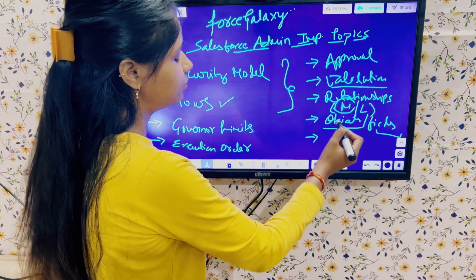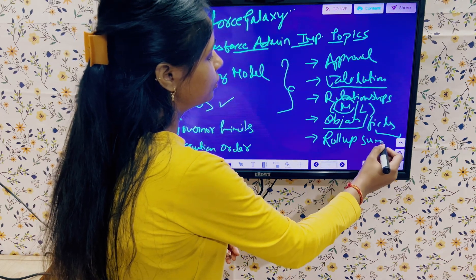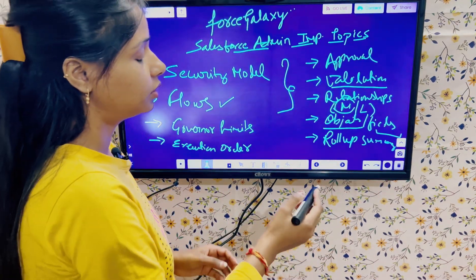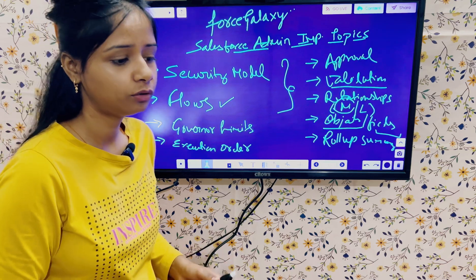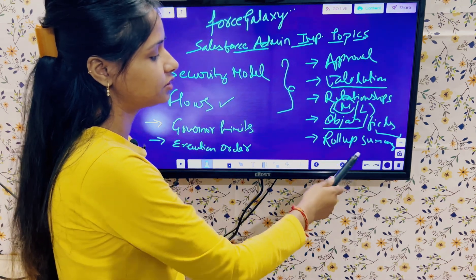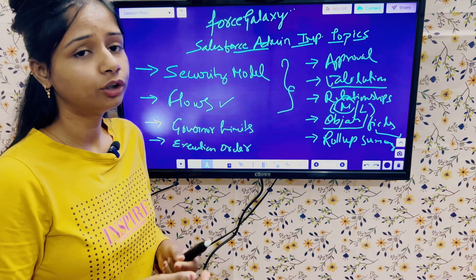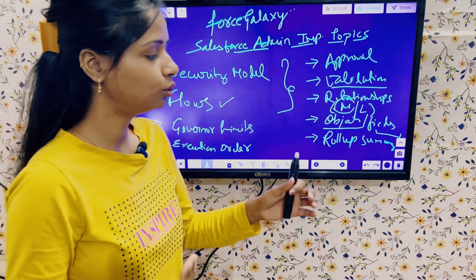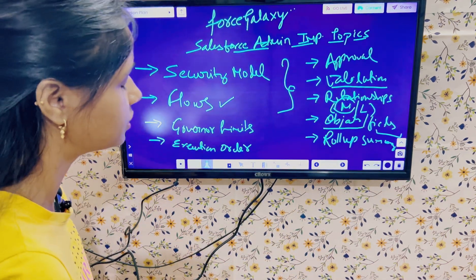Roll-up summaries also come under master-detail relationships, but many people forget to look into this. Roll-up summary is an important topic — you must be aware of the different functions available in roll-up summaries. Scenario-based questions can come like: if I want to change a master-detail relationship to a lookup relationship, what factors do I need to consider? If changing master to lookup, what will happen to the roll-up summary fields — will we delete them or create custom automation to replicate the same result? These kinds of questions can be asked.